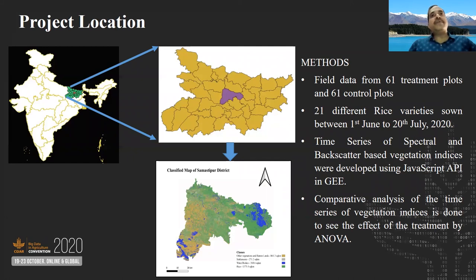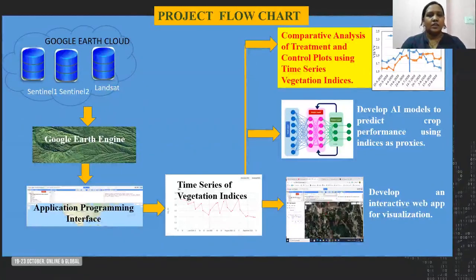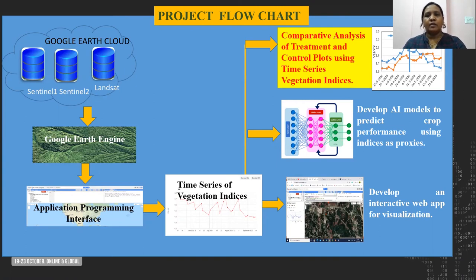Thank you, Dr. Srikant. In this project, we have accessed open source satellite data from Google Cloud using Google Earth Engine and developed time series of vegetation indices using some APIs. Using these indices, we have done a comparative analysis between treatment and control plots. We have also done an ANOVA analysis on that. The other objective is to develop AI models to predict crop parameters using these indices as proxies — the spectral and backscatter indices will be used as proxies. The other objective is also to develop an interactive Google Earth Engine-based web app for visualization of images and time series data.